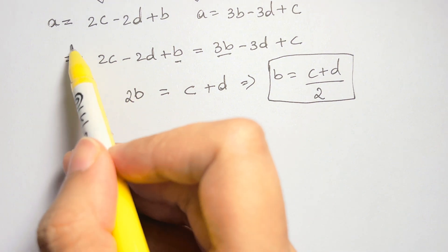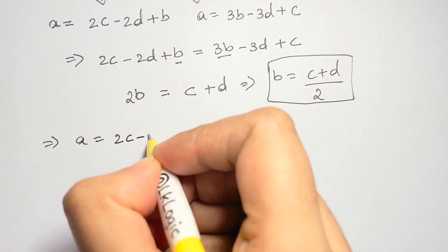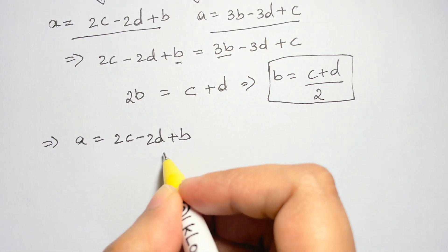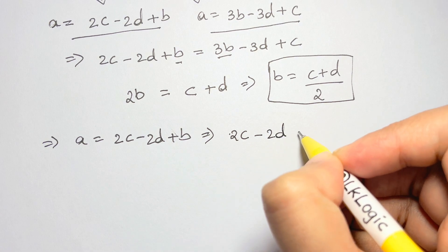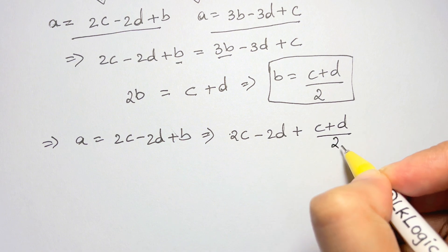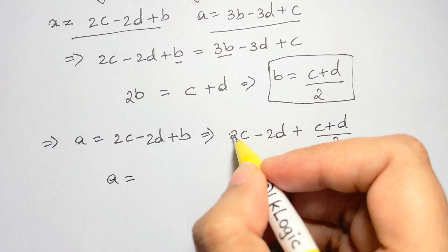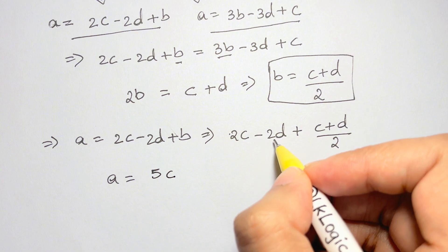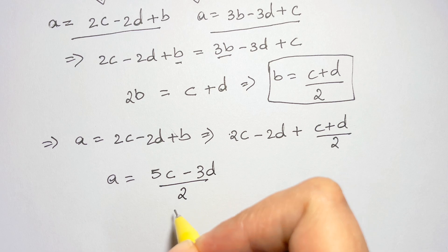Now let me find a by substituting b into one of the expressions. a is equal to 2c minus 2d plus b, which gives 2c minus 2d plus (c plus d) over 2. Taking the LCM, I get 4c plus c which is 5c, then minus 3d over 2. So a is equal to (5c minus 3d) over 2.